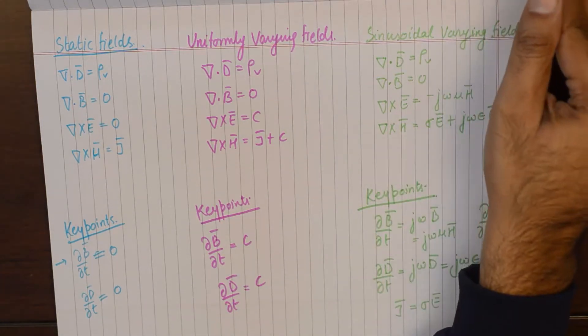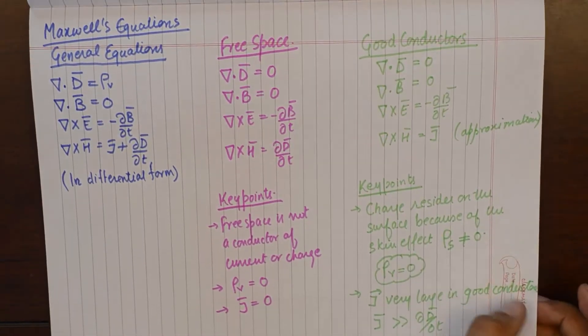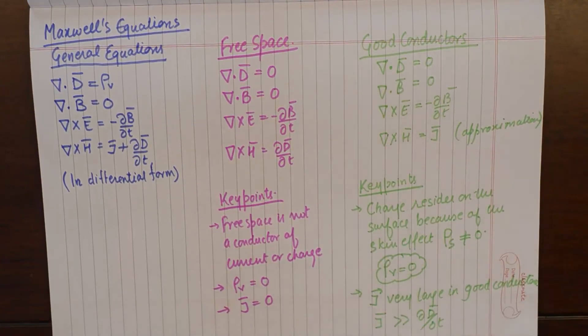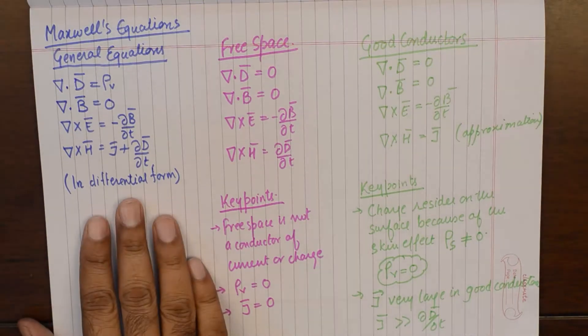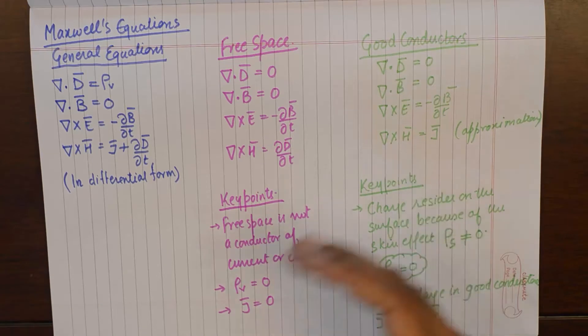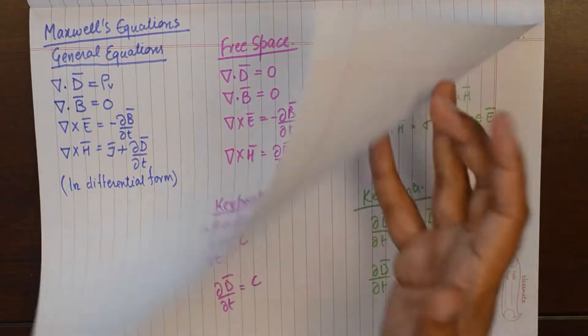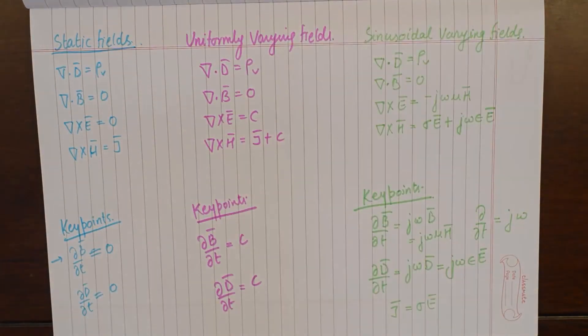These are the set of Maxwell equations in different conditions. You could pause the video and note it down in tabular form if you wish. We start off with the general equations, we make changes in those general equations depending upon what happens in that particular case. We have free space, good conductors, static fields, uniformly varying fields, sinusoidally varying fields. If you know these set of equations, you shall be able to use Maxwell's equation in numerical in a more quicker way.